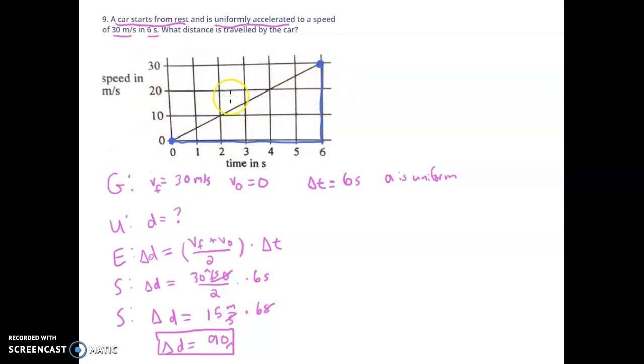In this case, you were given the graph, so you didn't even have to do that work. It turns out that when you have velocity and time on the same graph, the area in between the line or the curve and the time axis, this area here that I'm shading, is the distance traveled.